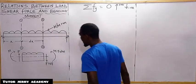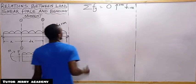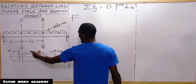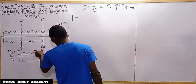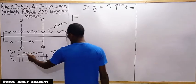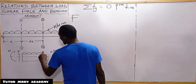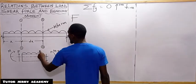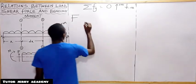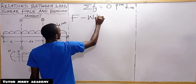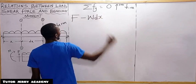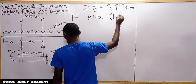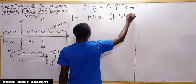Our upward force is F. The uniform distributed load has units of W per unit run, so we convert it to a point load by multiplying W by the distance ds, giving W·ds as a downward force — so minus W·ds. We also have the downward force at section 2, which gives minus (F + dF), all equal to zero.